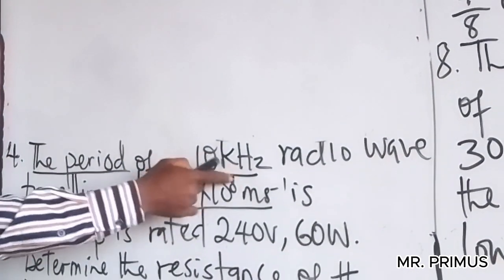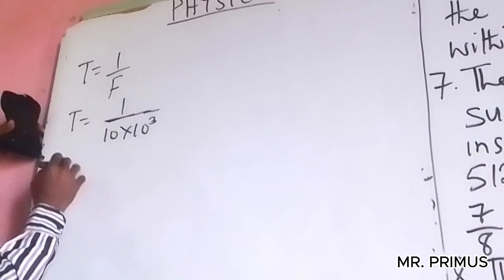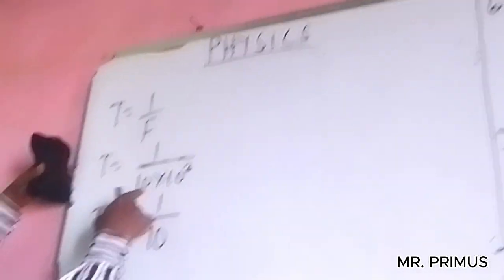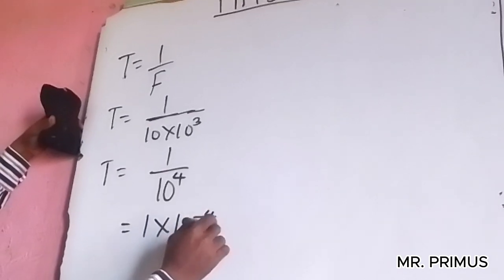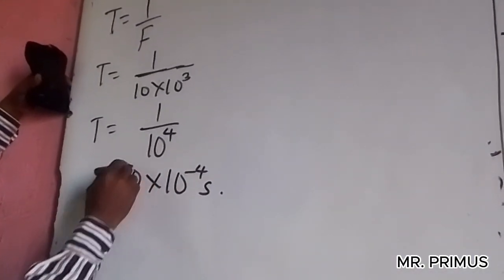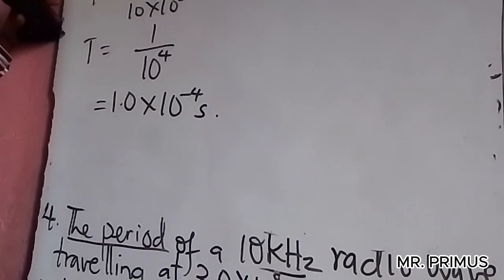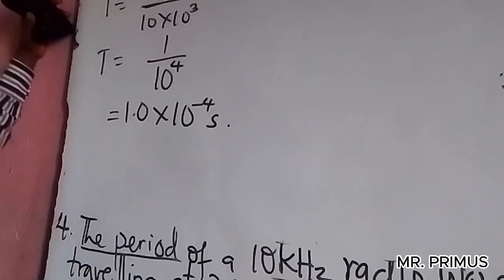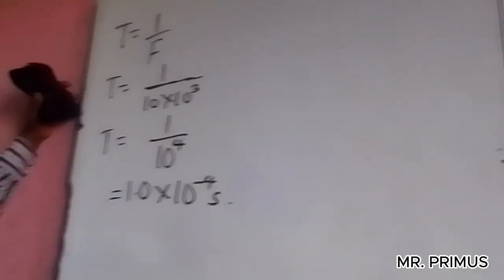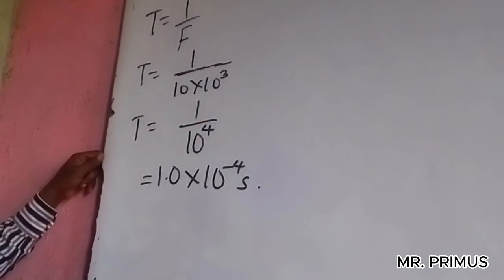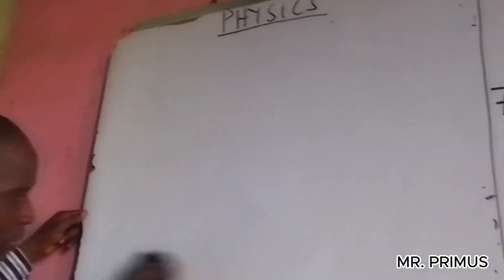So period = 1/frequency. The frequency is 10 kilohertz = 10 × 10³ Hz = 10⁴ Hz. Therefore T = 1/10⁴ = 1.0 × 10⁻⁴ seconds. These are the kinds of straightforward CBT questions you will see — be very careful and precise.